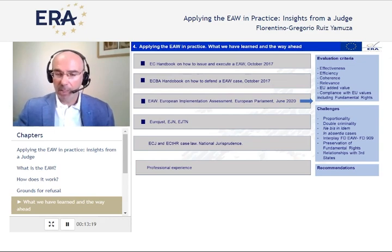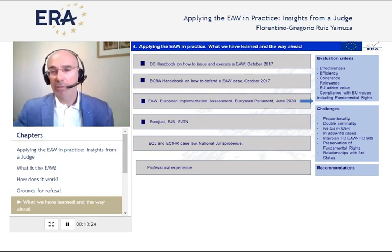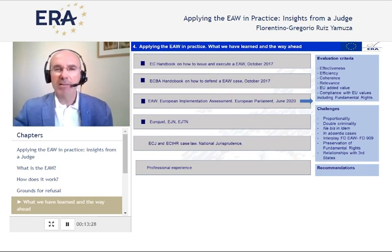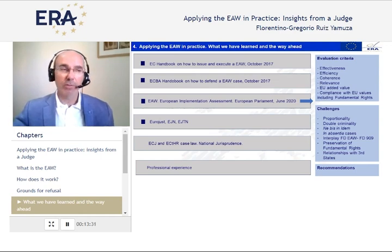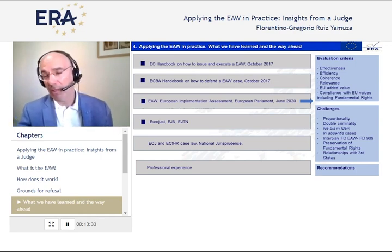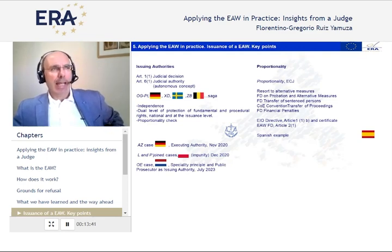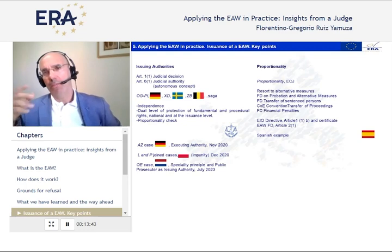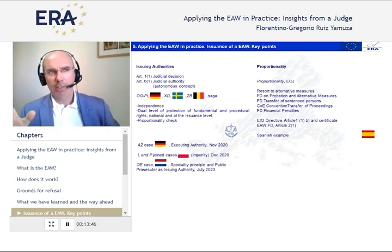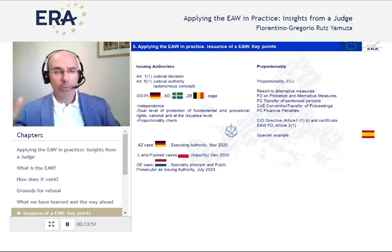There are recommendations, and most of them have to do with not using the European Arrest Warrant for minor crimes, increasing training, and resorting to alternative measures. Going back to the overview, we are going to split it in two parts: issuing difficulties and executing difficulties — or challenges, or problematic areas, call them what you like.